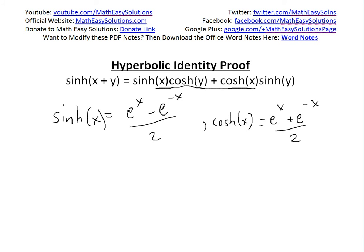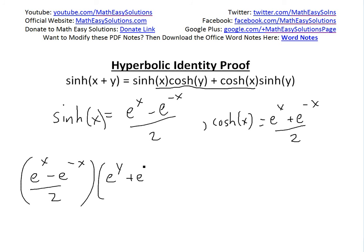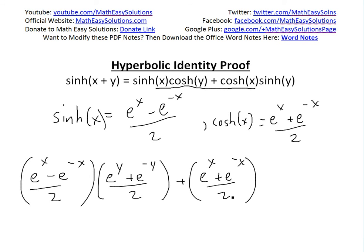Writing that out, sinh of x is e to the x minus e to the negative x, divided by 2, multiplied by cosh of y, which is e to the y plus e to the negative y, all divided by 2. Then plus cosh of x, which is e to the x plus e to the negative x divided by 2, multiplied by sinh of y, which is e to the y minus e to the negative y divided by 2.